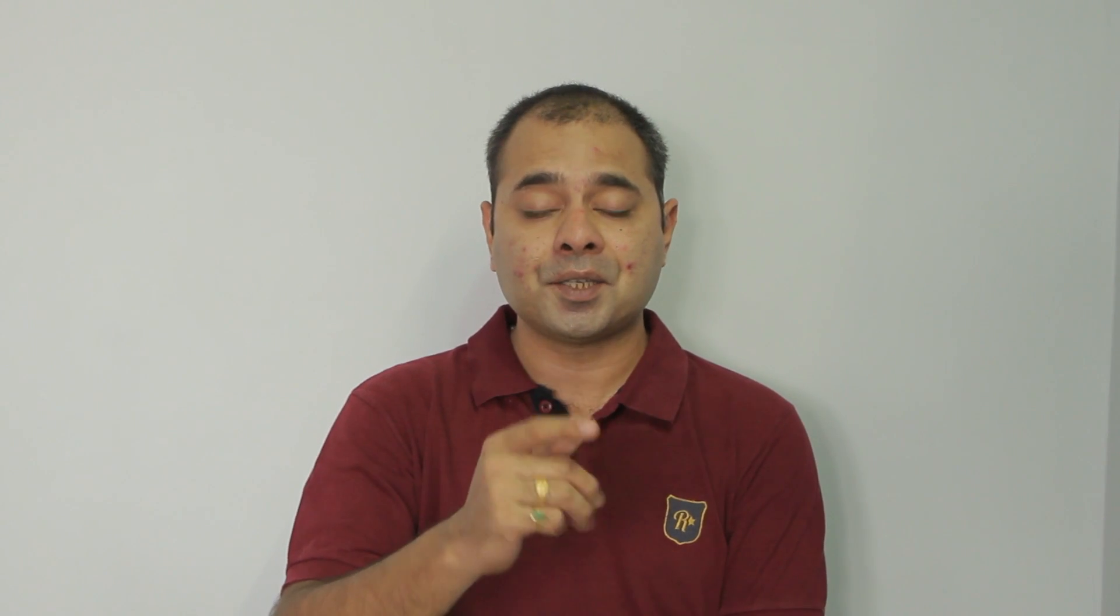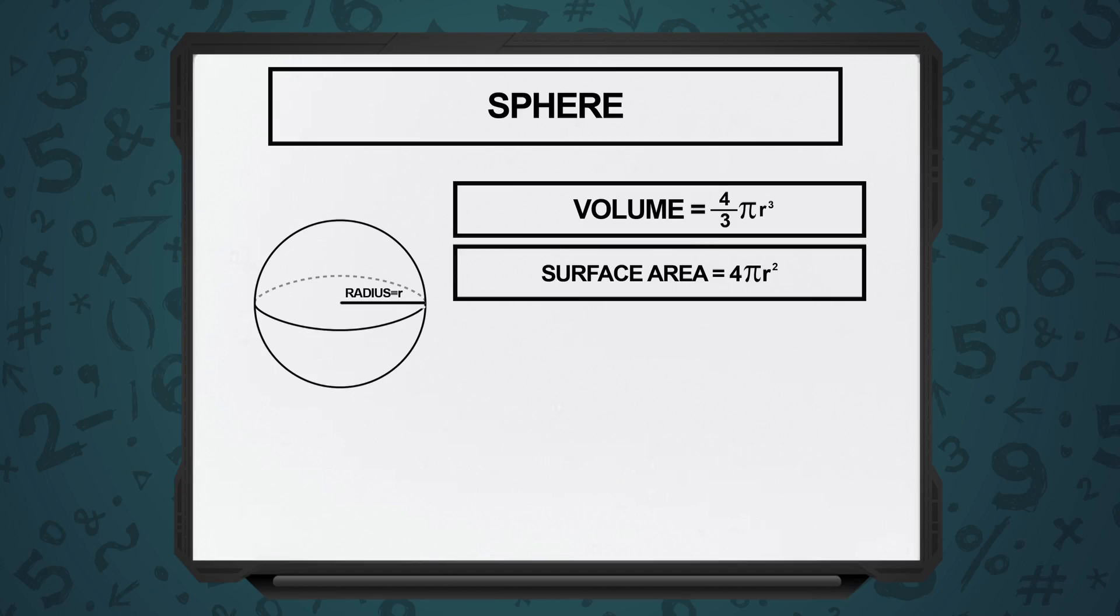Remember, whenever we have discussion to do with areas, the distance part will be to the power 2. And whenever we are doing volume, because we have three dimensions, the distance part will have a power of 3. So, surface area of a sphere is 4 pi r square. Volume of a sphere is 4 by 3 pi r cube.